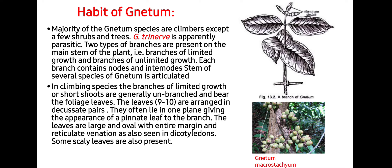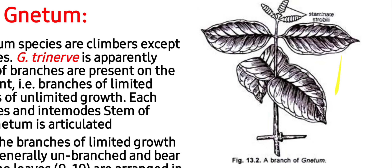The majority of Gnetum species are climbers, except a few shrubs and trees. Gnetum tenuifolium is apparently a parasitic species. Two types of branches are usually present: branches of limited growth and branches of unlimited growth. Each branch contains nodes and internodes. The stem of several species is articulated, i.e., jointed due to the presence of nodes. In climbing species, branches of limited growth are short, generally unbranched, and bear foliaceous leaves, with 9 to 10 leaves arranged in decussate pairs.